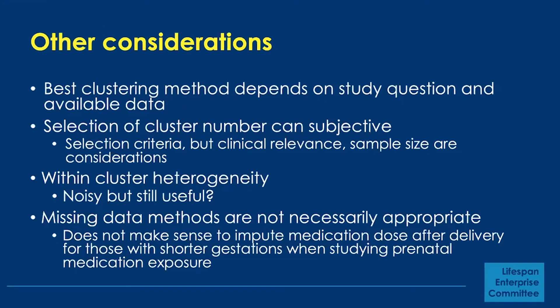Within-cluster heterogeneity can be a concern. If there's a lot of noise, we might miss a signal. We know there will be some heterogeneity within each trajectory, but we want to make sure it's not so noisy that it's no longer useful.